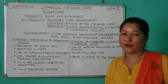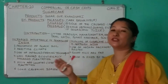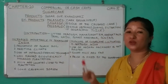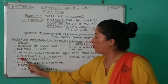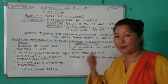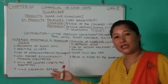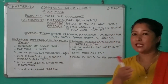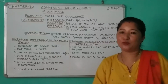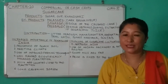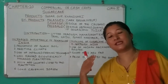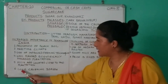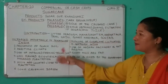Third, use of improved farming techniques and modern methods of production. Fourth, well-planned and scientifically managed plantations. Fifth, mills are located close to the plantations, so transportation costs are less and the sugar cane can be crushed within 24 hours of harvesting. Sixth, southern states have a longer crushing season — these are the facilities enjoyed by sugar cultivators in the southern states.